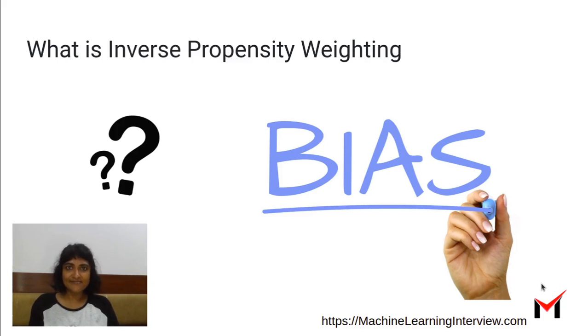What is inverse propensity weighing or sometimes called IPW? IPW or inverse propensity weighing is a technique that is used to combat sampling bias.